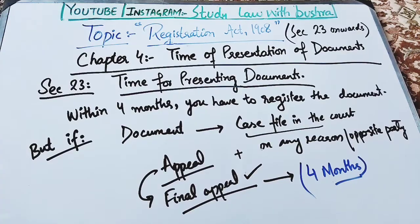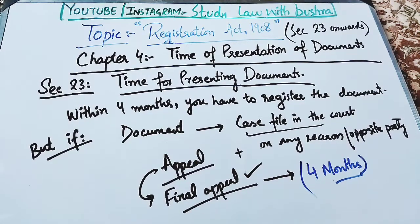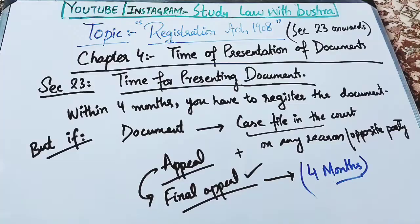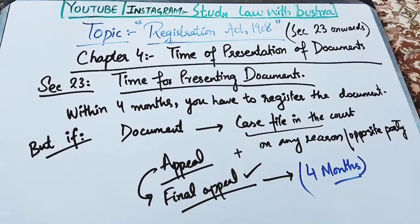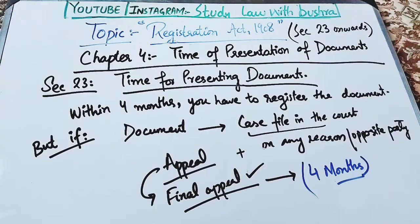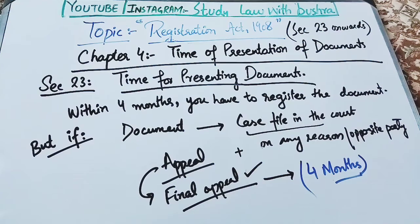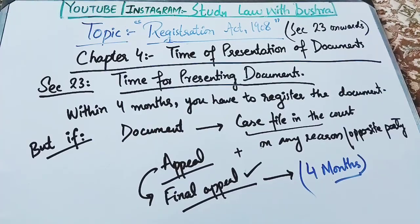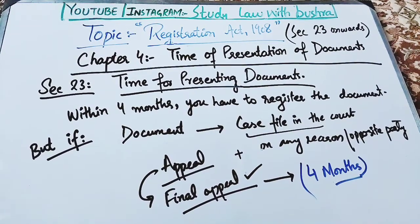Section 23 का title है: Time for Presenting the Document. Section 23 clearly यह बात कह रहा है कि जब आप किसी document की registration के लिए जाओगे तो within 4 months आपने उस document को register कराना है। यानि 4 months का fixed time period है। लेकिन अगर उस document से related कोई case court of law में file हुआ है — opposite party के objection की वजह से या किसी भी reason से — और वो case appeal में गया है, तो जैसे ही उस case की final appeal आएगी, उस final appeal आने के बाद within four months आपने इस document को registrar के office में जाकर register कराना है। यानि total fixed time period है four months.